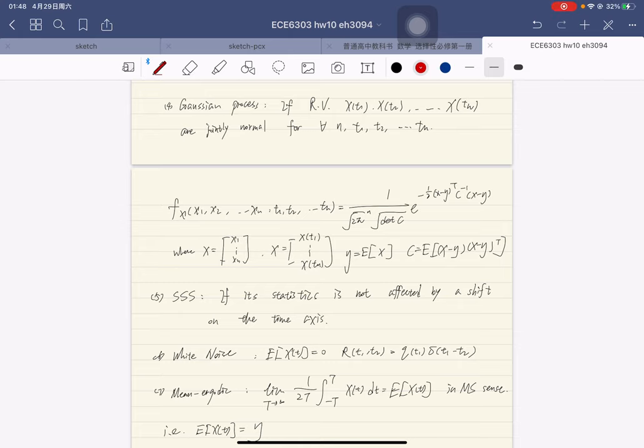Where X is the vector of X1 to Xn and big X is the vector of random process X(T1) to X(Tn).